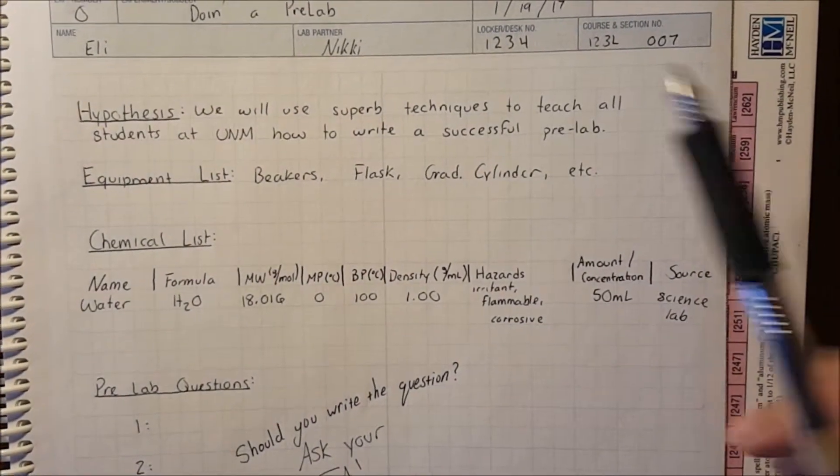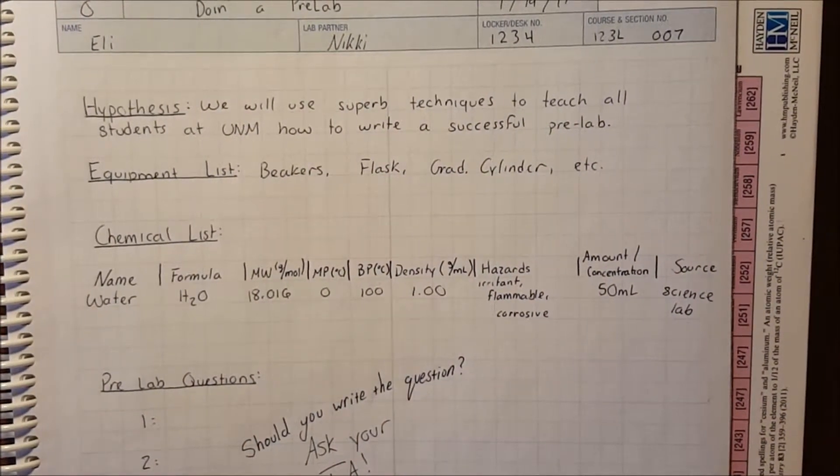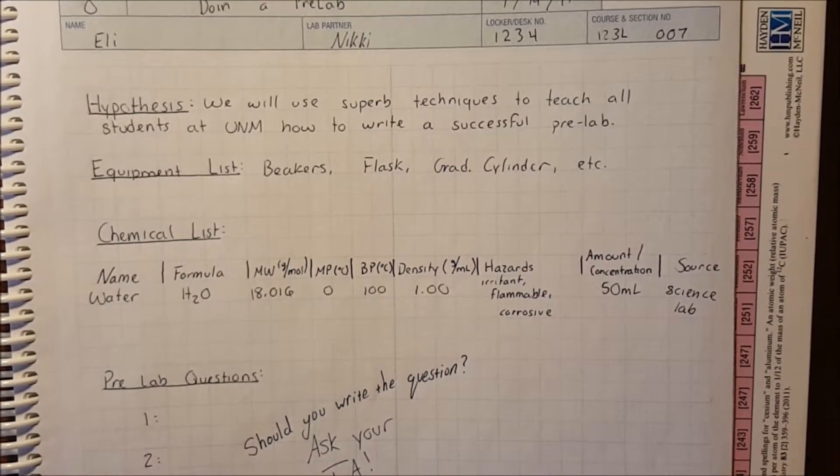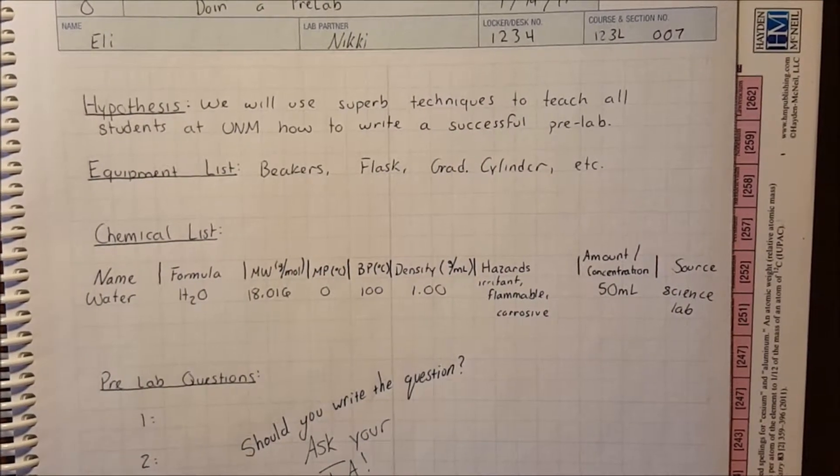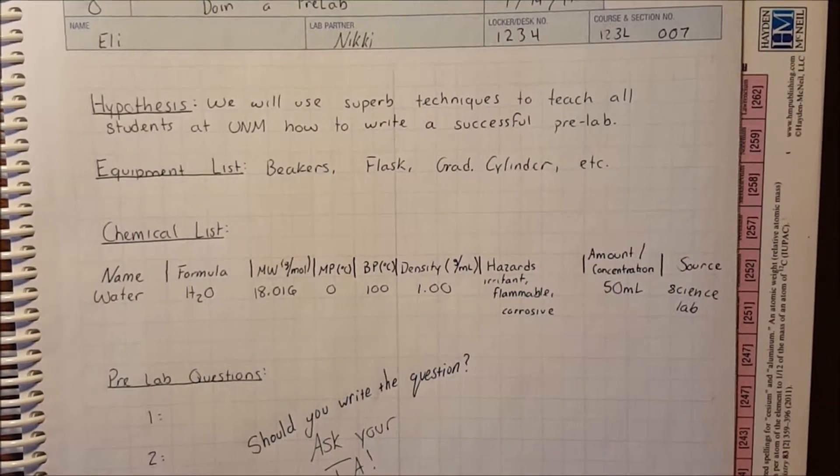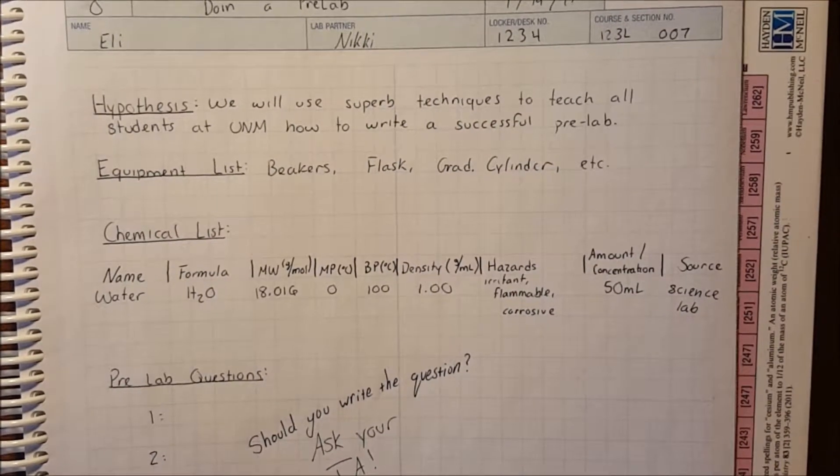Next, you have your hypothesis. Using information from the reading and video, you will describe specific techniques that will yield a desired result or product. Many TAs will count off points if the specific terms that you are using in the lab is not used in the hypothesis.